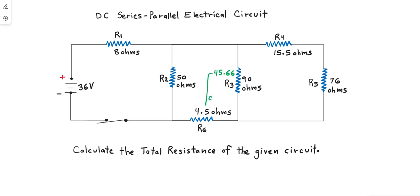Then we carry on and combine the series R6 resistor. All we need to do is add these two together, which gives us 50.16.